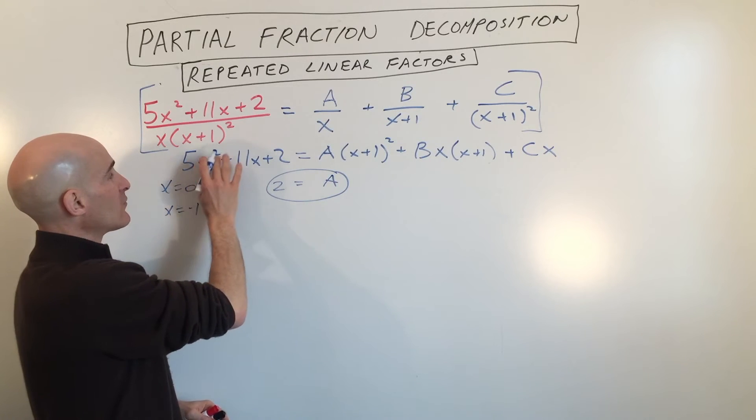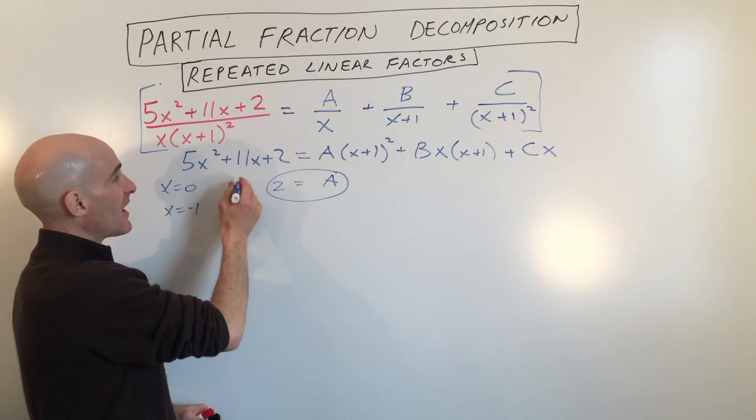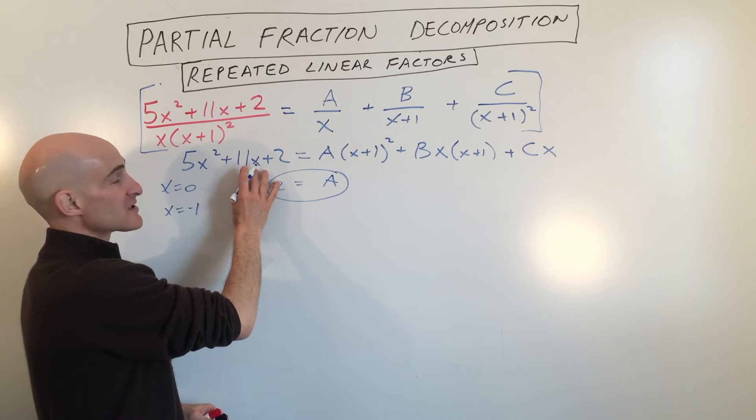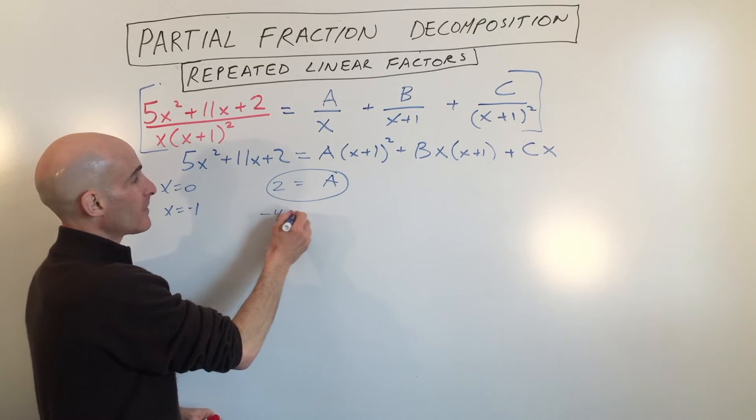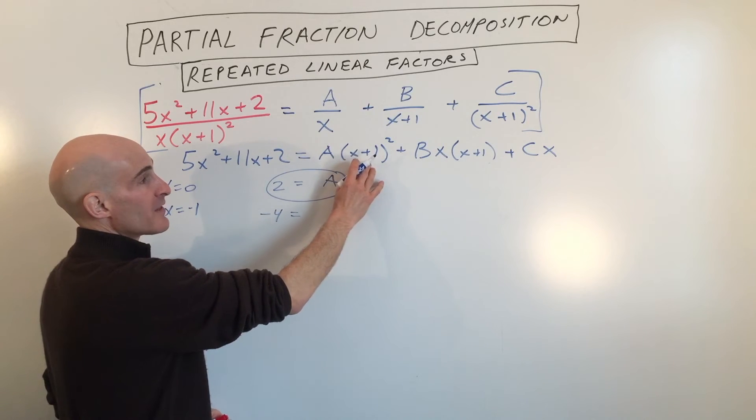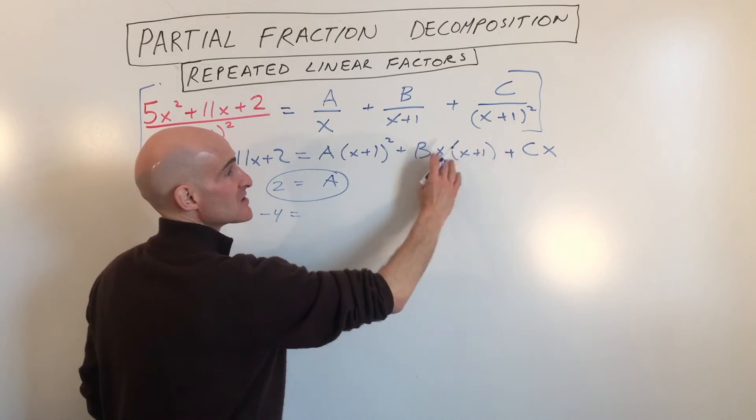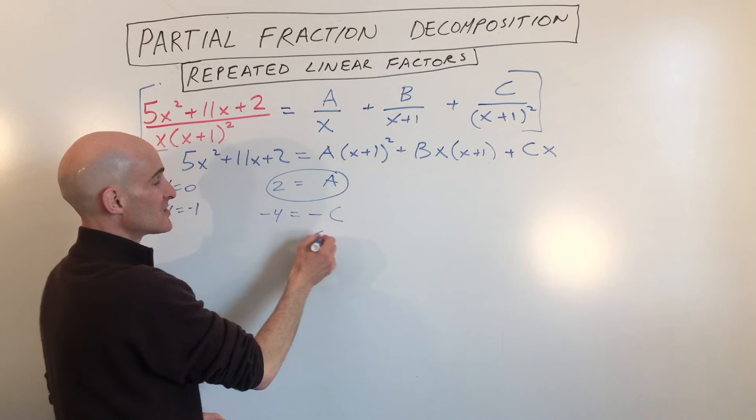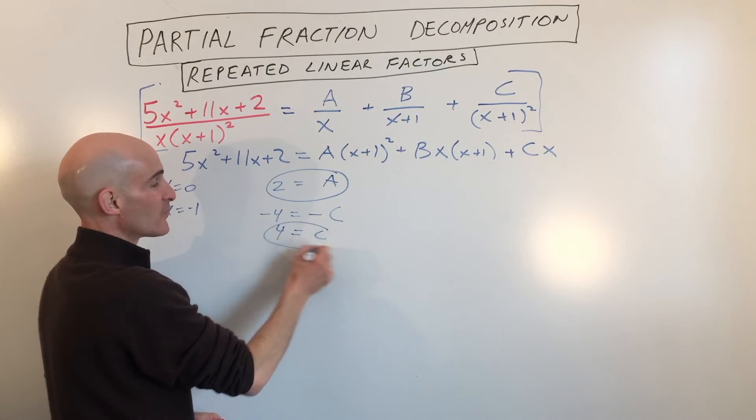We get negative 1 squared is 1 times 5 is 5. Okay, plus negative 11 is negative 6 plus 2 is negative 4. Okay, negative 1 plus 1, that's going to make this 0. That's going to make this 0. That's going to make this negative C. So you can see that C equals positive 4.